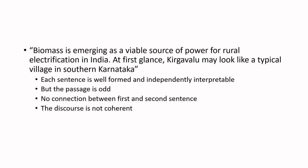So what is coherence? Looking at this example: 'Biomass is emerging as a viable source of power for rural electrification in India. At first glance, Kirga Walu may look like a typical village in southern Karnataka.' This paragraph feels very odd. We are talking about biomass and electrification, but suddenly the idea changes to Kirga Walu looking like a typical village in southern Karnataka — a totally different concept. Each sentence is well-formed and independently interpretable, but the passage appears odd because there is no connection between the first sentence and the second. The discourse is said to be incoherent.